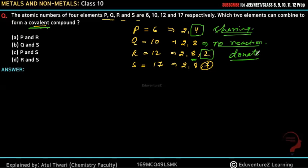S needs one electron. S can accept and S can also donate. P has four electrons, so P can share.